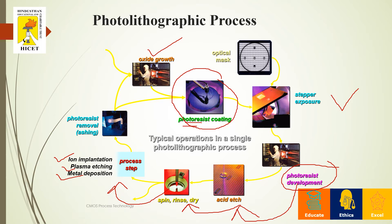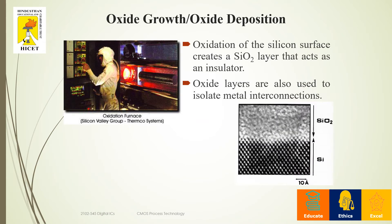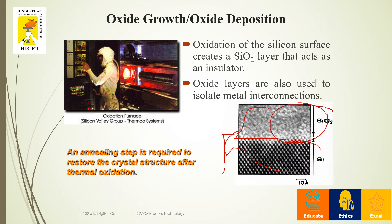Once ion implantation is done, we remove the photoresist using an etching or ashing process. The oxide layer is then created — the oxidation of the silicon surface creates a silicon dioxide layer, which behaves like an insulator and is used to isolate metal interconnections. As shown here, silicon dioxide is deposited onto the silicon. A step called annealing is required to restore the crystal structure after oxidation. This oxidation takes place with the help of heat and is called thermal oxidation.